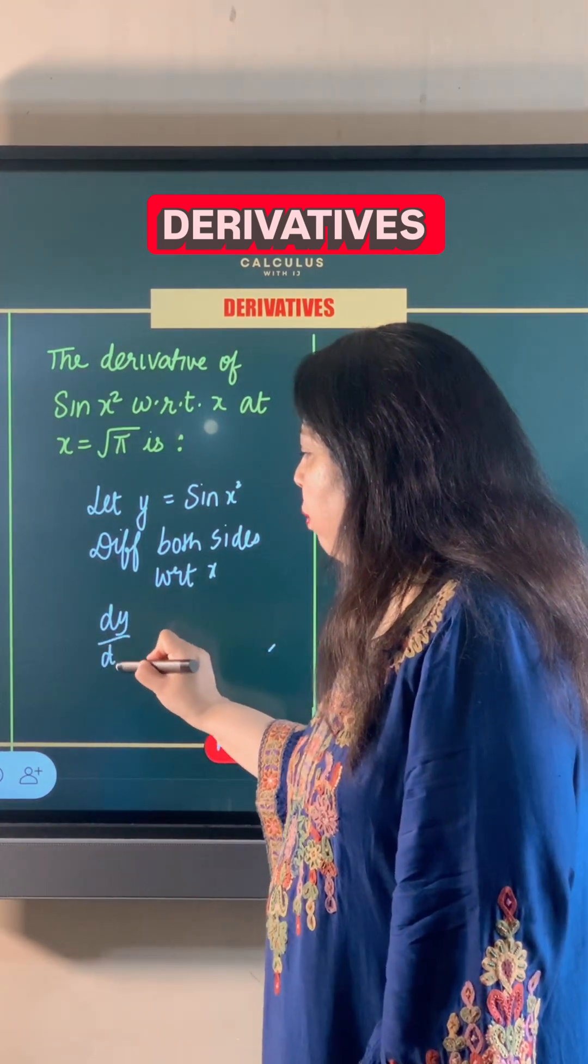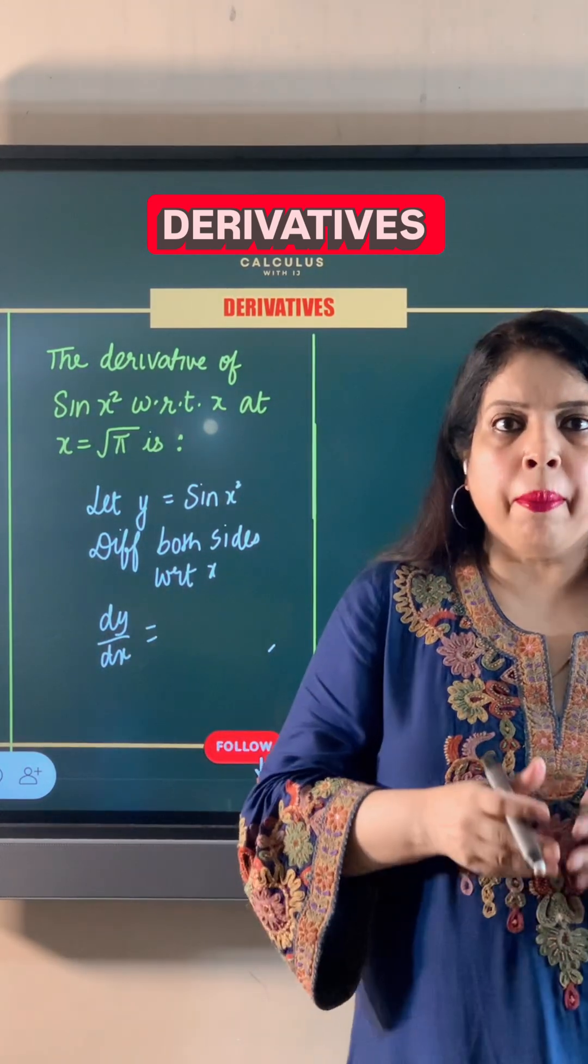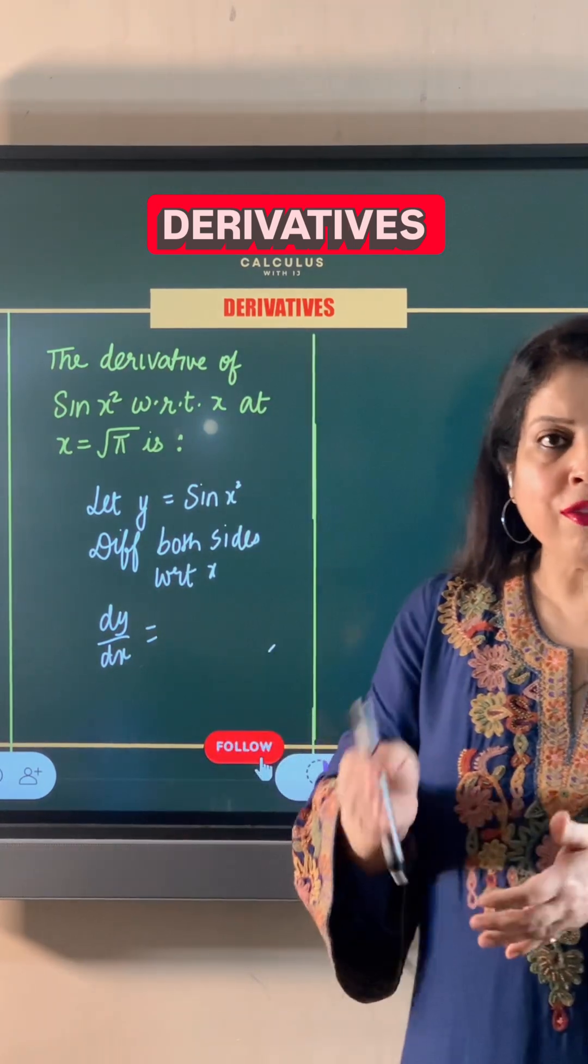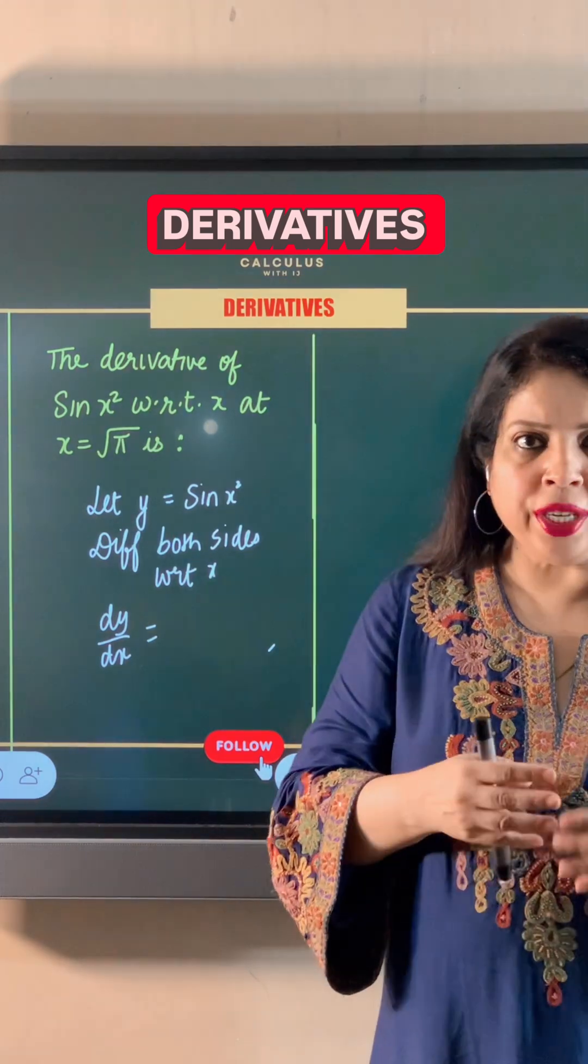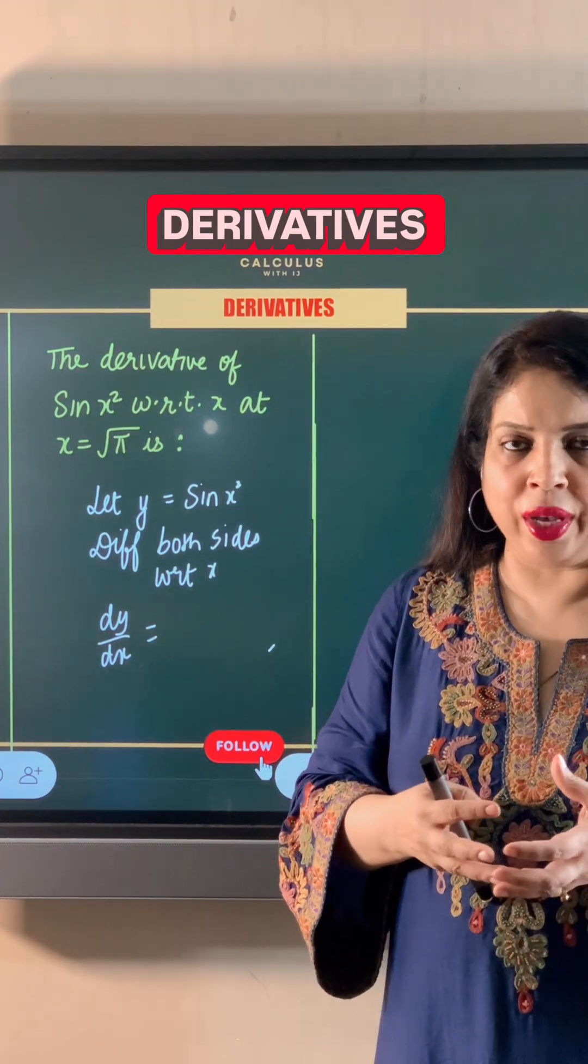And derivative of sin x is cos x. But instead of x we have x² as the angle of sin. So according to chain rule, we also need to take the derivative of x².